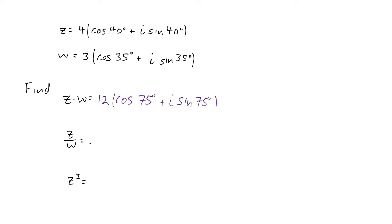How about z over w? We take the 4 and the 3 and we divide 4 by 3, so we get 4 thirds. Then it's the same form, we're leaving this in polar form, so it's cosine of an angle plus i sine of an angle. And what is that angle? When we divide the complex numbers, we subtract the angles. So 40 minus 35 is 5 degrees and 5 degrees over here. It's always the same angle in both places.